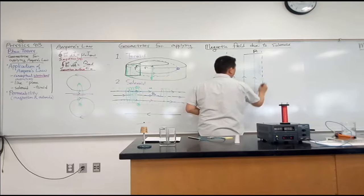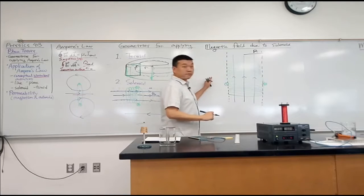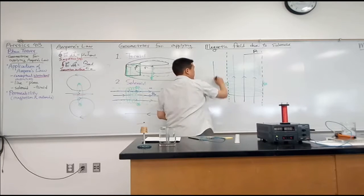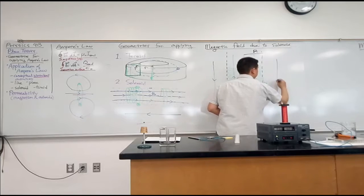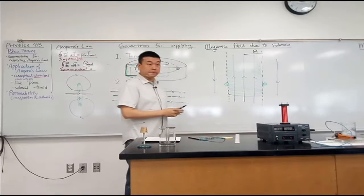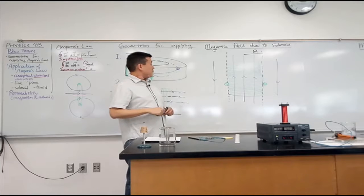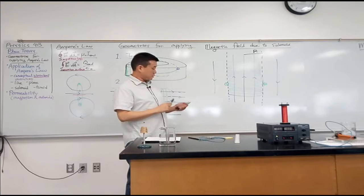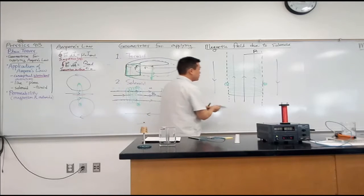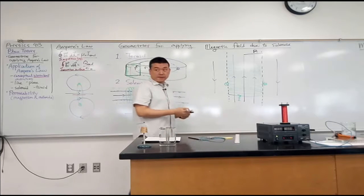And magnetic field outside, if there is any magnetic field outside, it should point downward. So there's the obvious current I that's flowing through the wire.